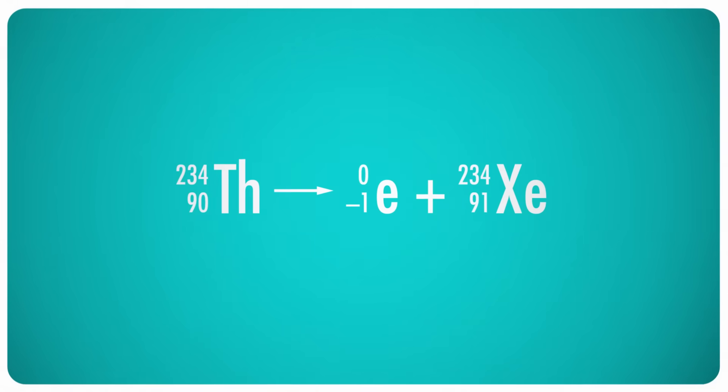So that thorium-234 that formed when uranium underwent alpha decay? It can continue to decay on its own, and when it does, it undergoes beta decay, releasing an electron and an atom of xenon.